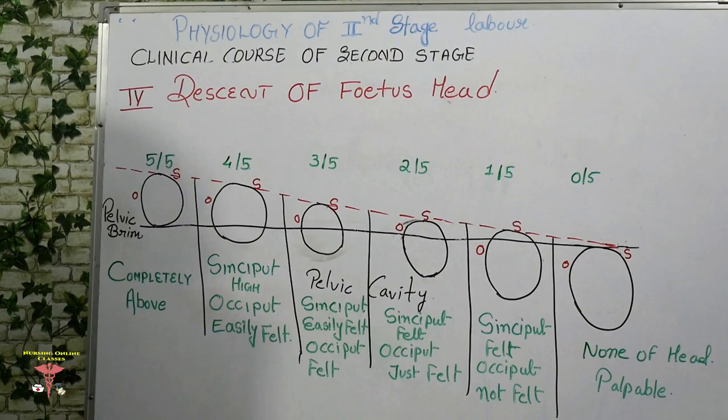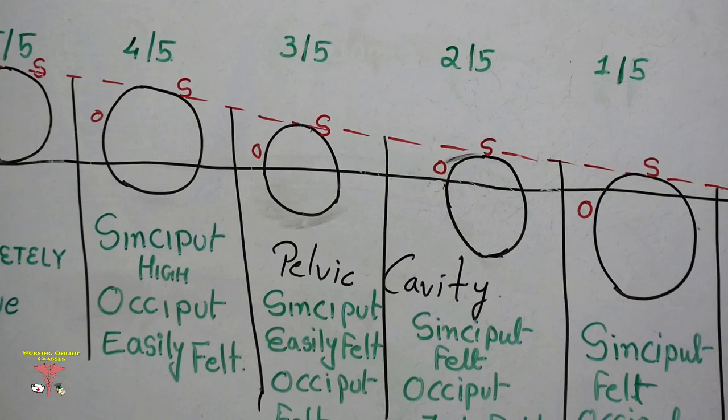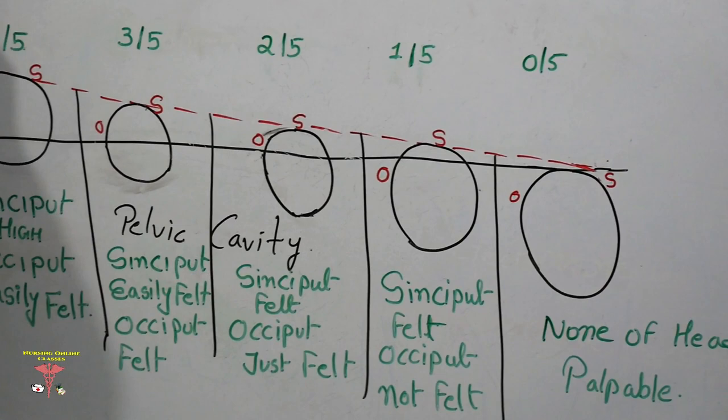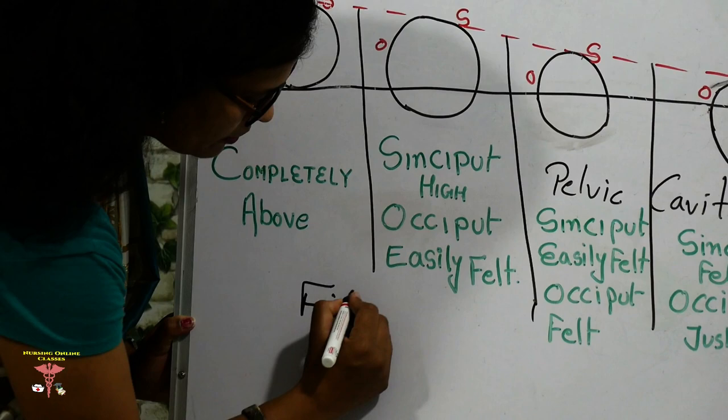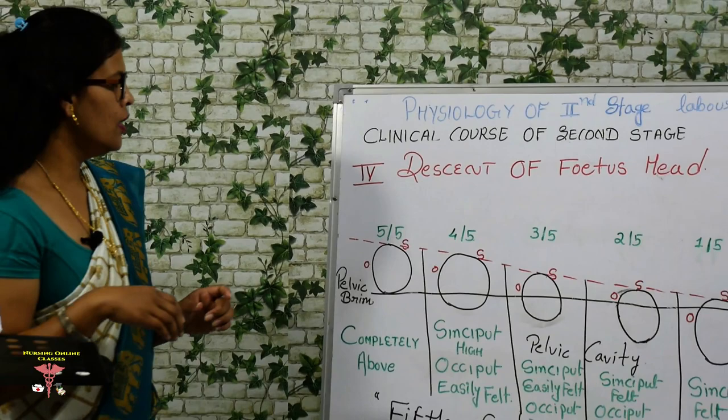The progressive descent of the head can be assessed by using the fifths formula. This formula allows us to identify and assist in monitoring the descent of the fetal head throughout labour.